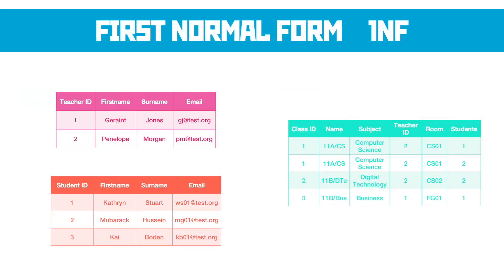You'll notice straight away we've reduced the overall amount of data we need to store. I've also added a key field to each table — that's the first field in the list that gives a unique value for each item.